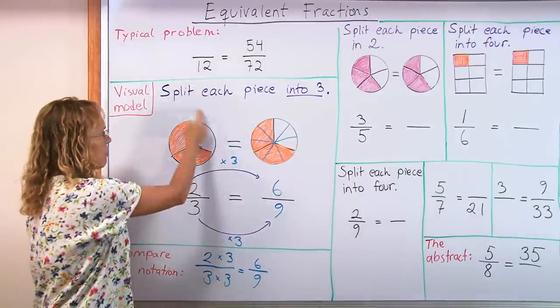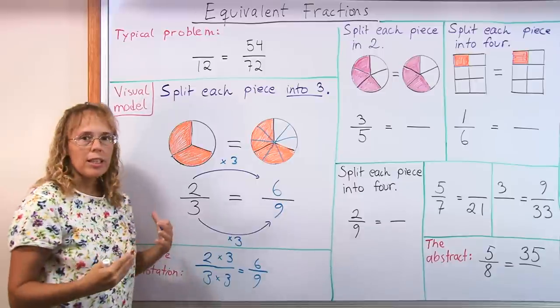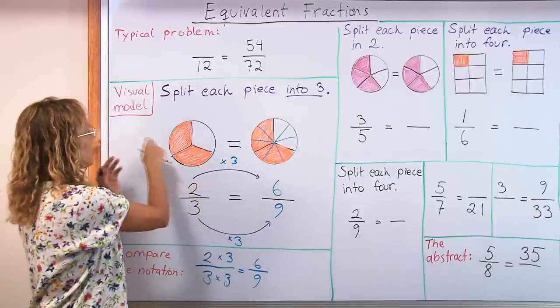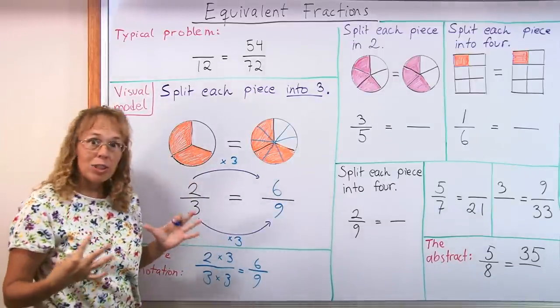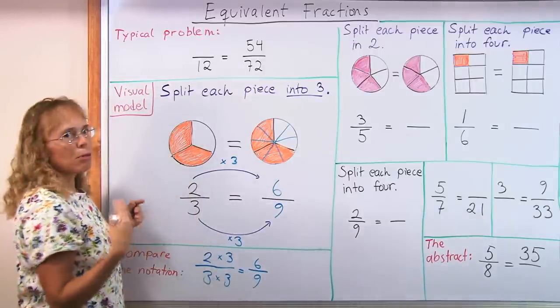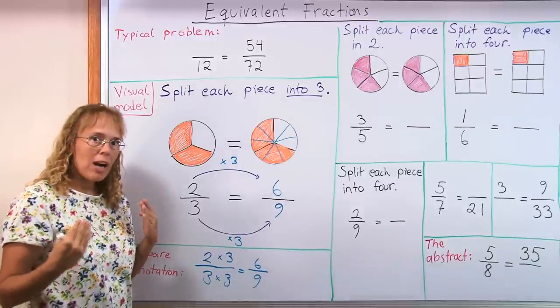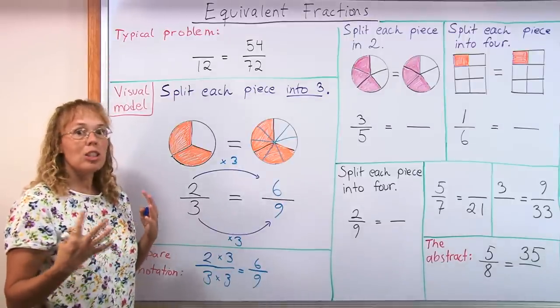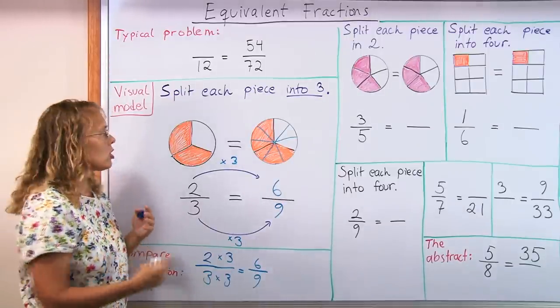If I take this fraction and multiply it by times 3, I will take three copies of this, which would make much more pie to eat, right? But in equivalent fractions, the amount of pie to eat, or pizza, does not change. The value of the fraction does not change.